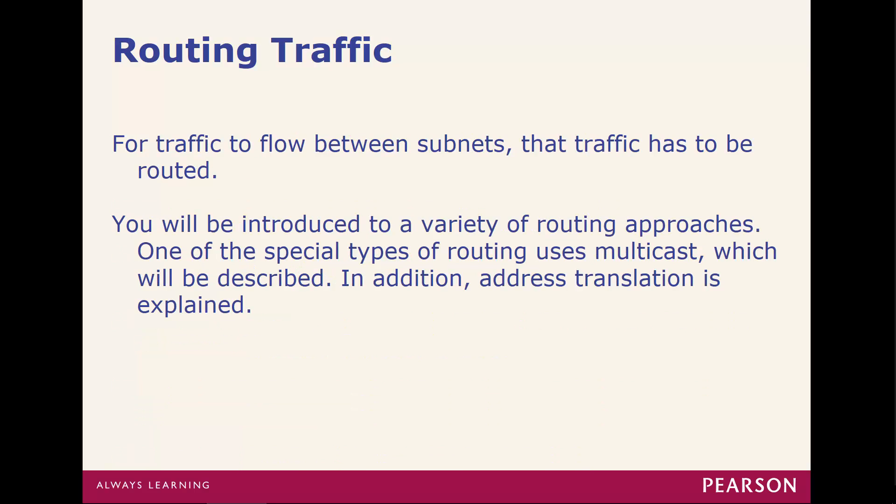In order for traffic to flow from one network to another, the traffic has to be routed — a path has to be selected so that it can go from one network to another. That's what we mean by routing traffic. We're going to be introducing a few routing approaches, including a special type that uses multicast, and also address translation.